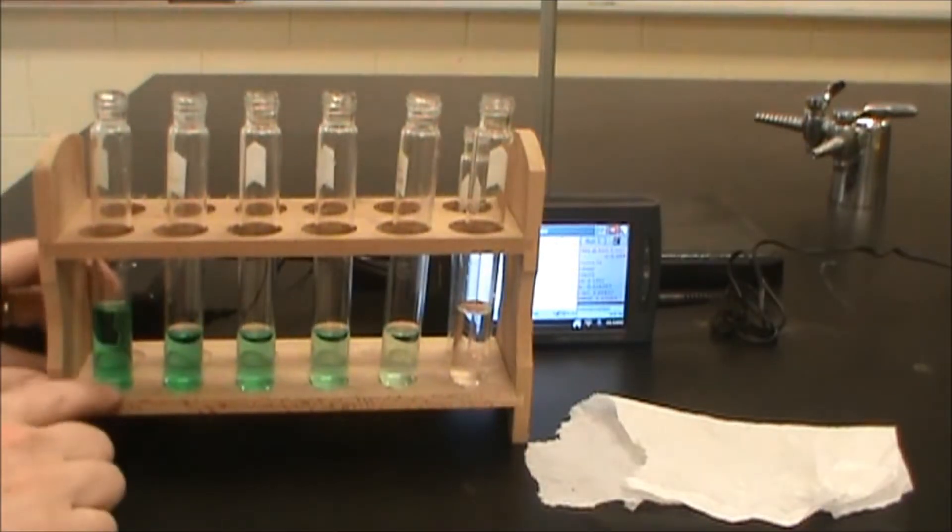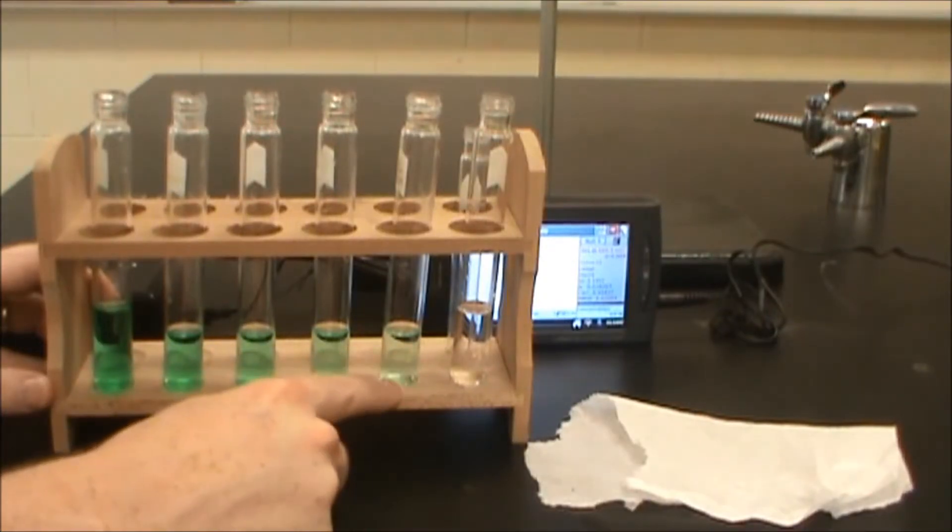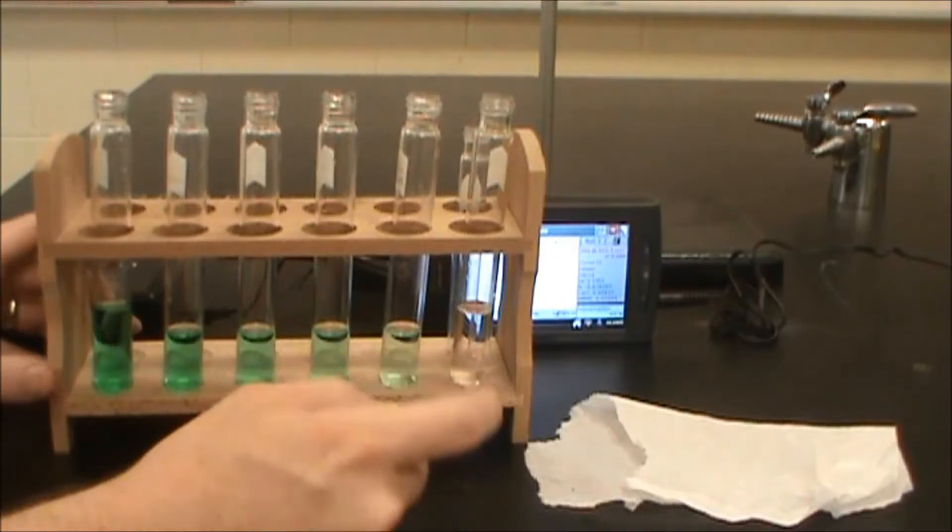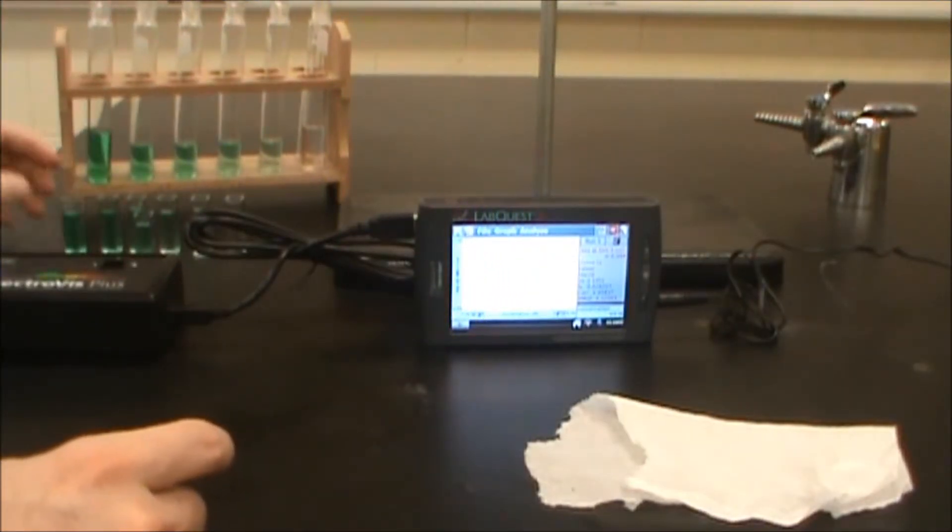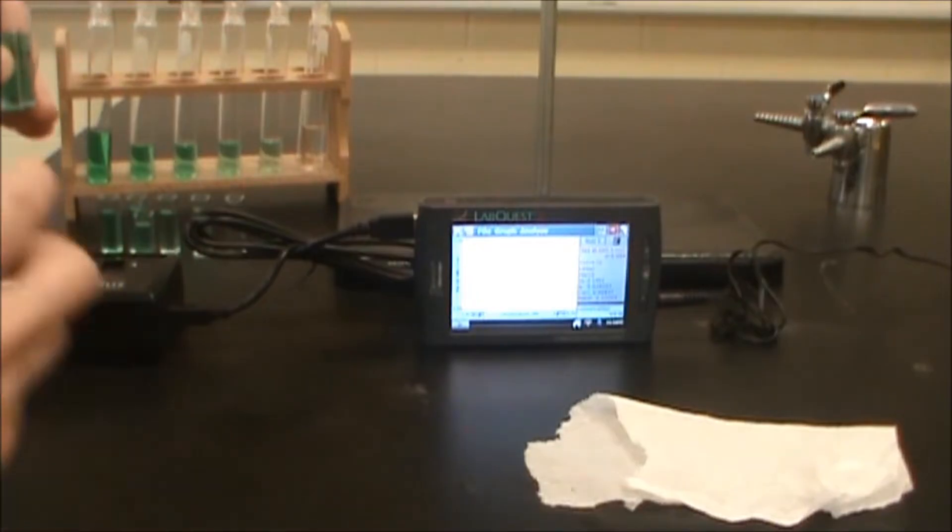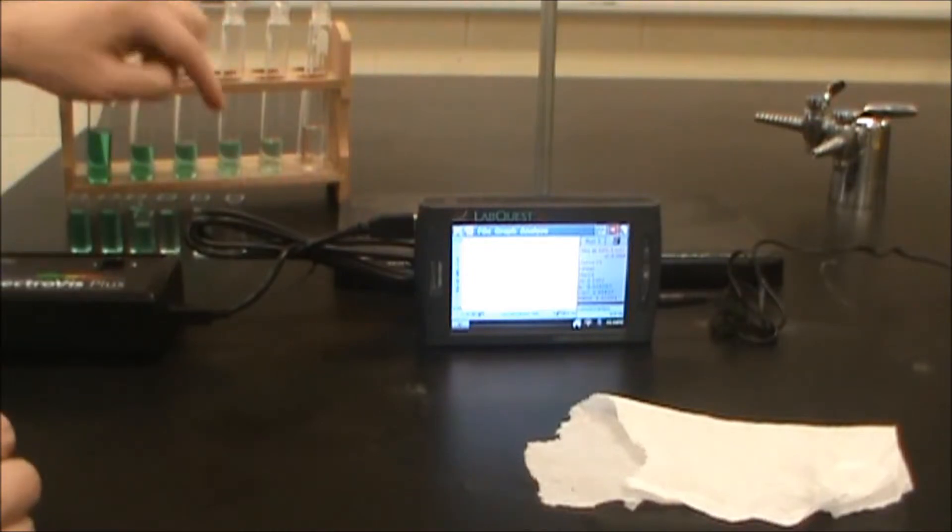So what I have here is 0.4 molar nickel sulfate solution, 0.32 molar, 0.24 molar, 0.16 molar, 0.08 molar, and then distilled water. And what I've done is I have taken each of those and put them into cuvettes. So this is the 0.40 molar, 0.32, 0.24, 0.16, 0.08, and 0.